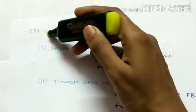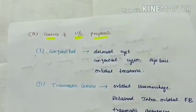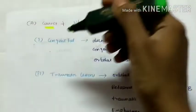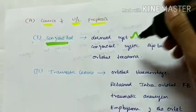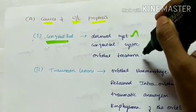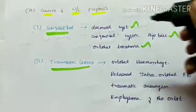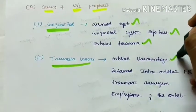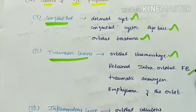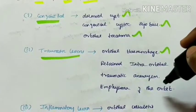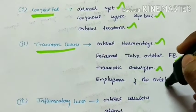Causes of unilateral proptosis. The causes include congenital causes like dermoid cyst, congenital cystic eyeball, and orbital teratoma. Traumatic lesions like orbital hemorrhage, retained intraorbital foreign body, traumatic aneurysm, and emphysema of the orbit.